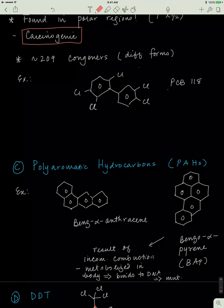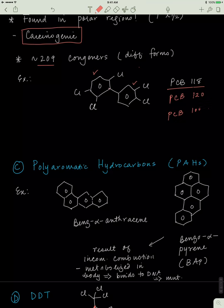Let's look at an example, PCB 118. We can see those two benzene rings and chlorine atoms. There are many different arrangements these can take, precisely 209 different arrangements. We call all those different forms congeners, and we rename them like PCB 120 or PCB 100, etc.